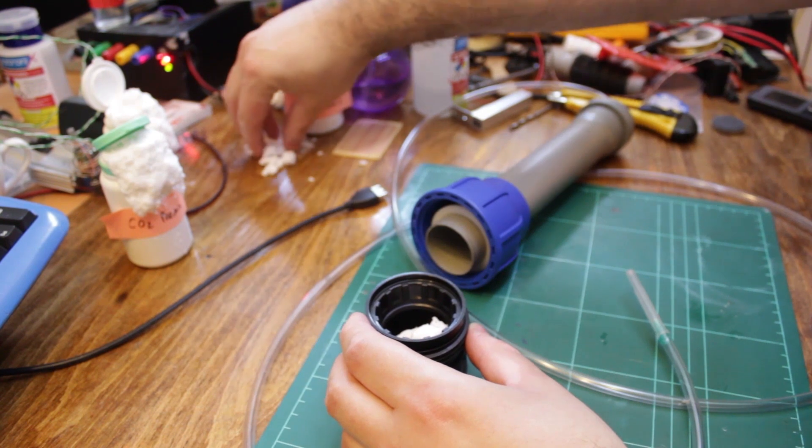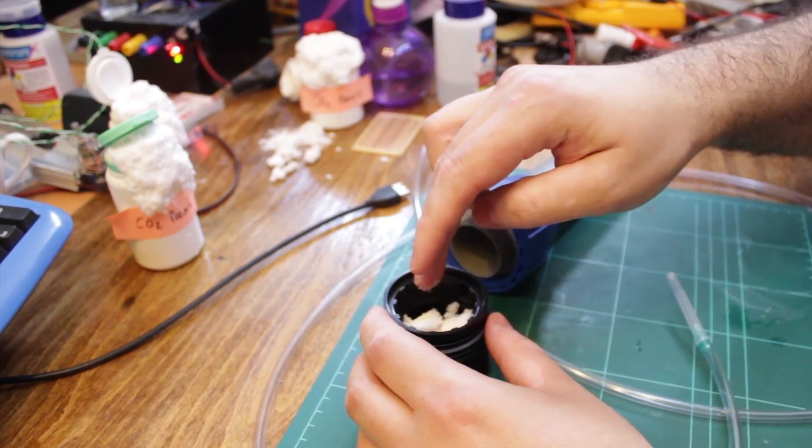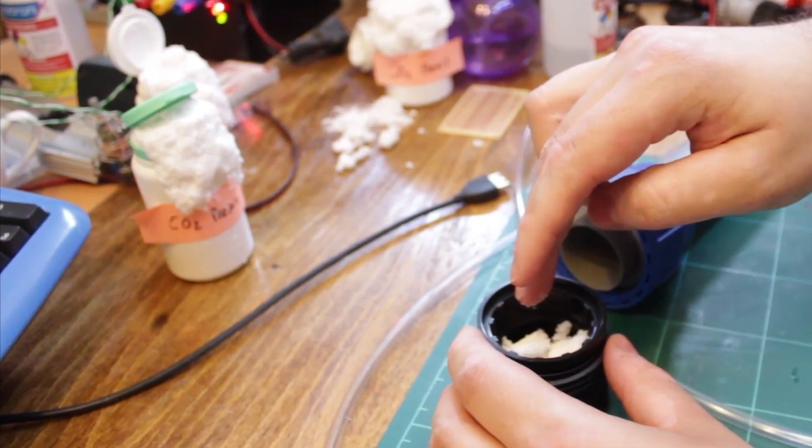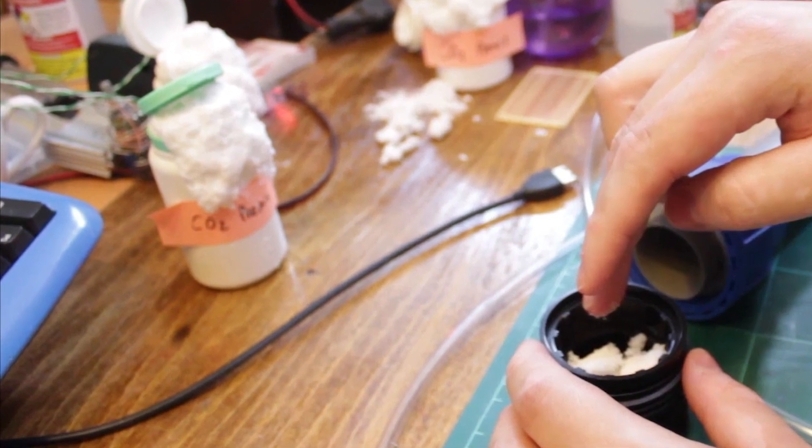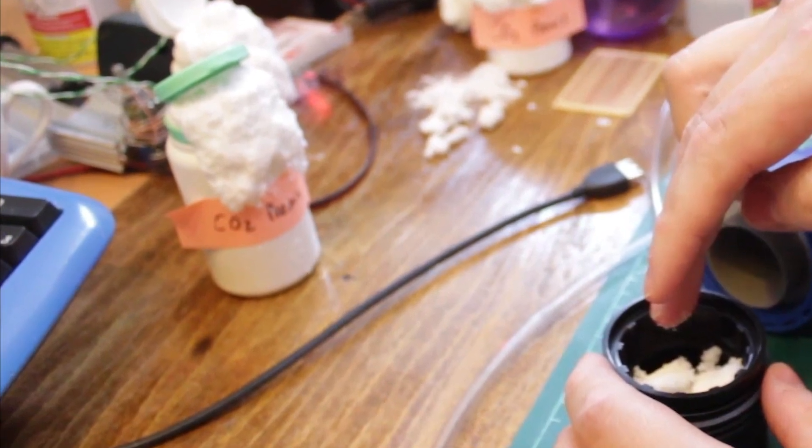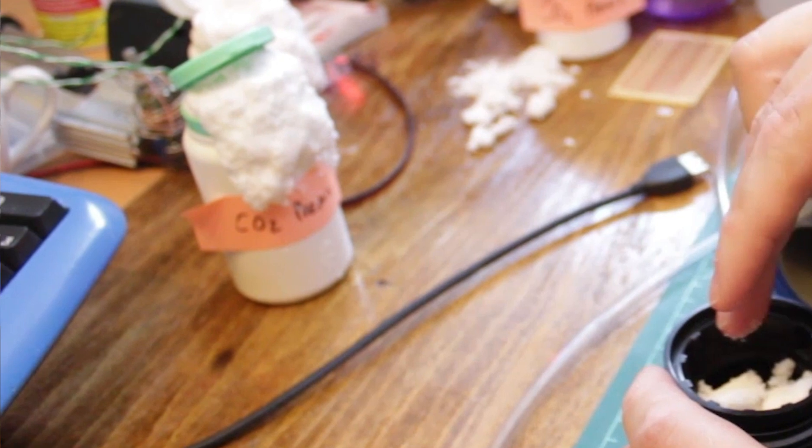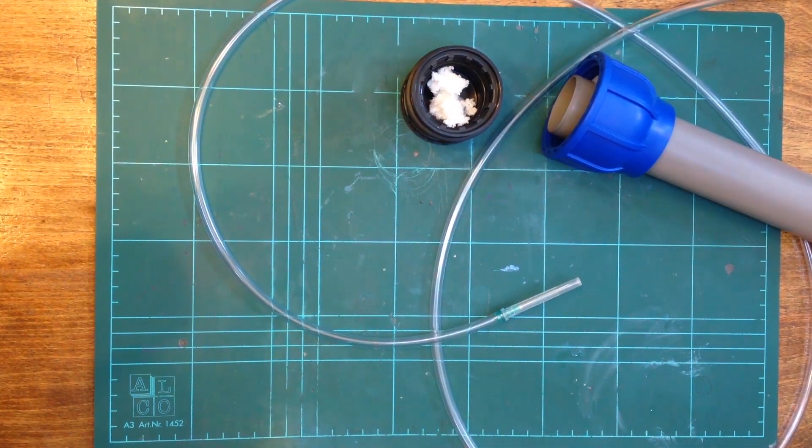By the way, if you premix your sodium bicarbonate with citric acid, make sure to store them in a dry environment, not like I did. Otherwise, you may get some premature fizzing. Luckily, the mix still worked and I managed to test it.